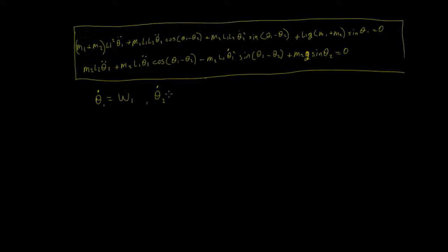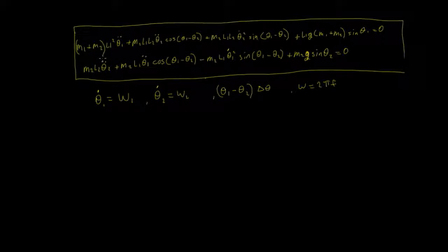We define the second angular frequency as omega two. We'll also define delta theta as theta one minus theta two. We know that omega is the angular frequency in radians per second, so it's two pi f. Also note that l1 appears in all terms of both equations, and since all terms equal zero we can cancel out that l1.